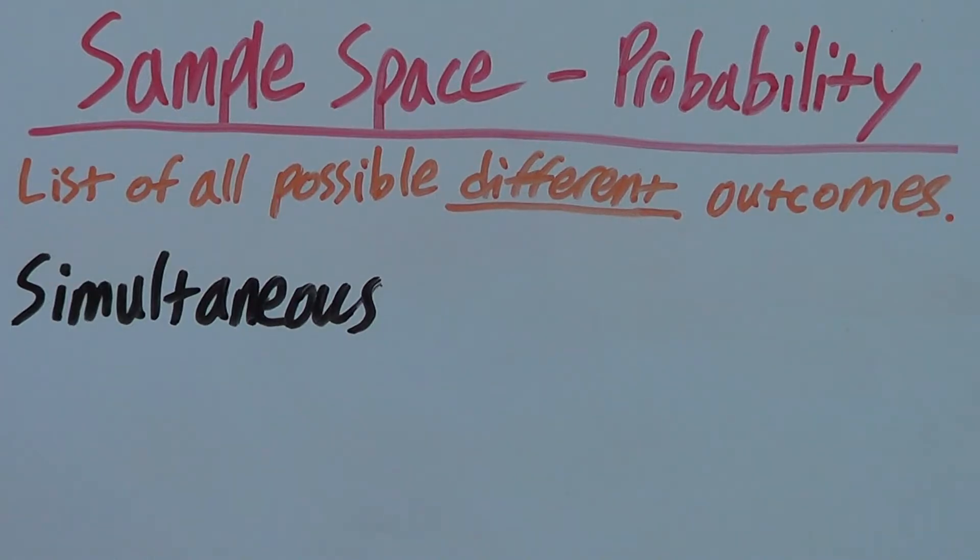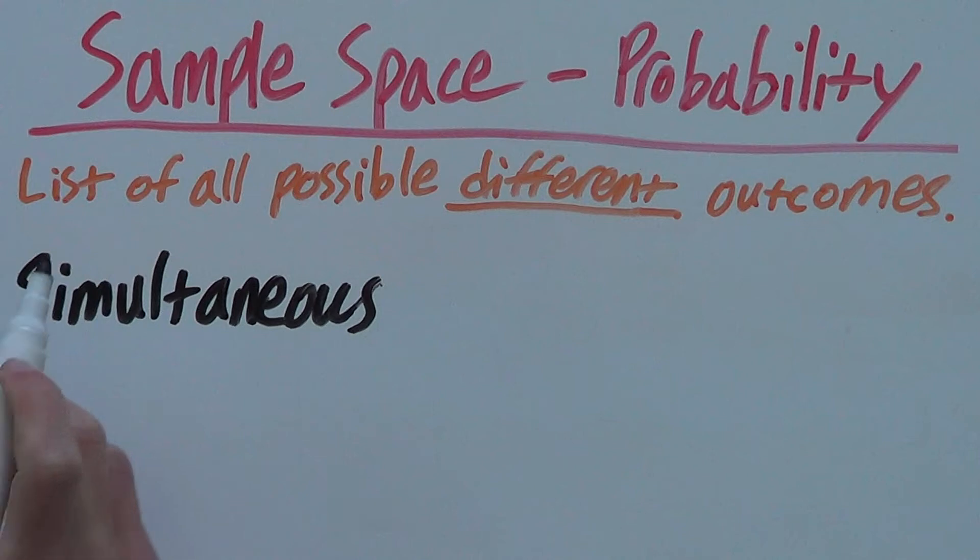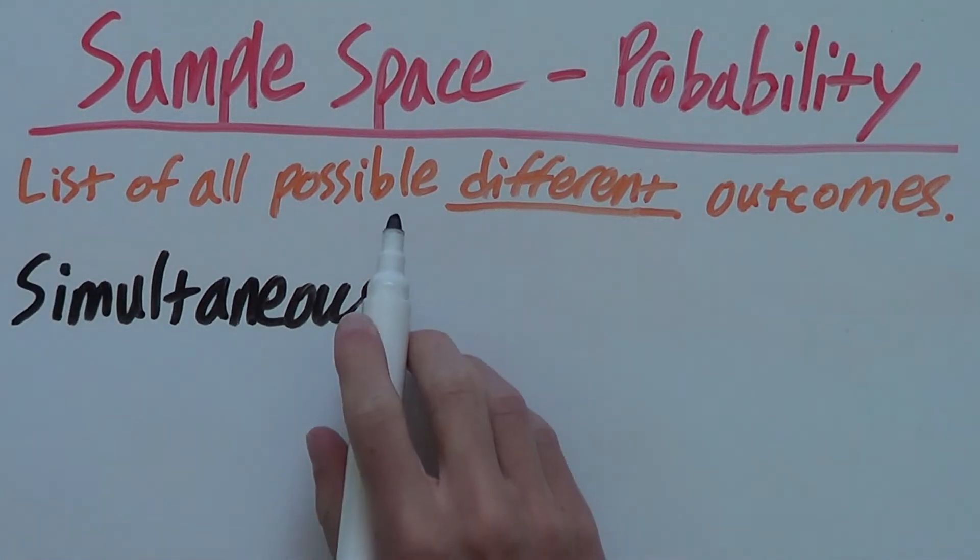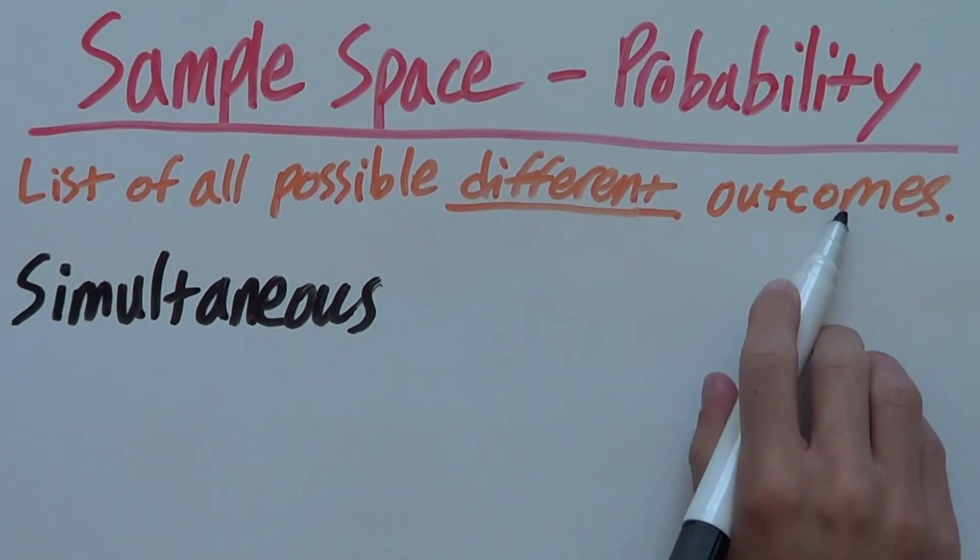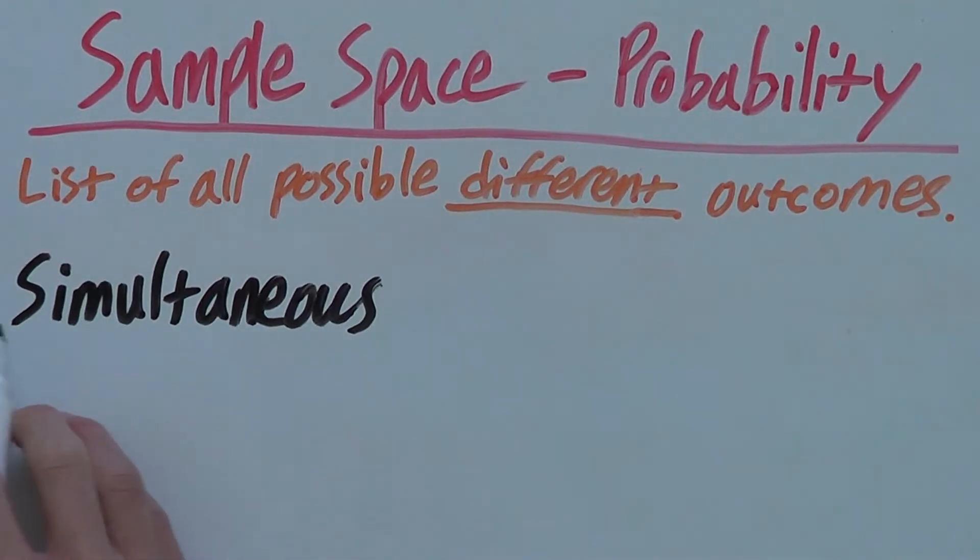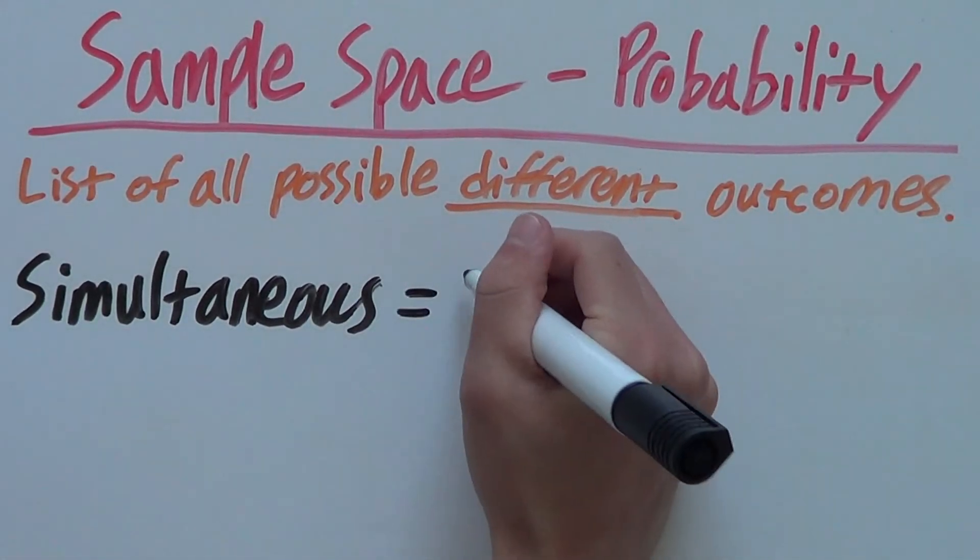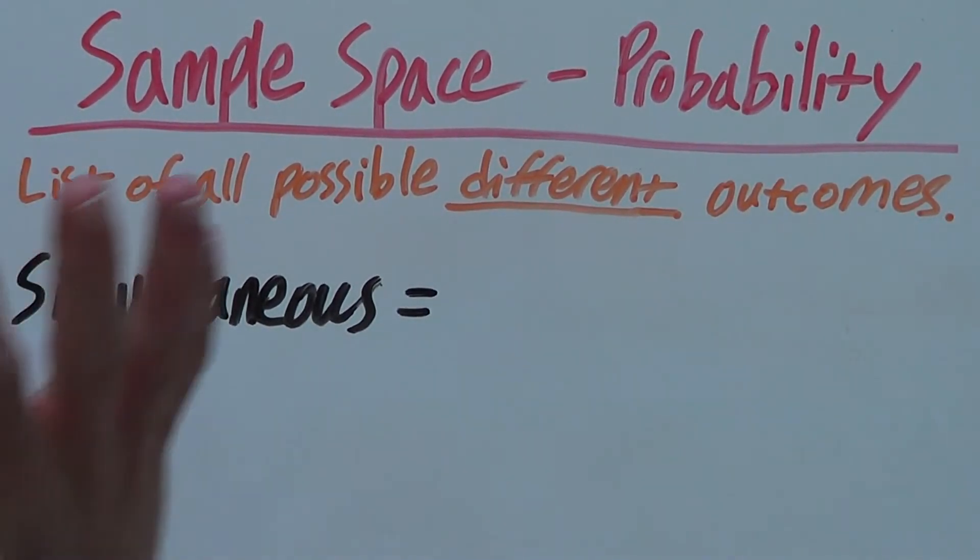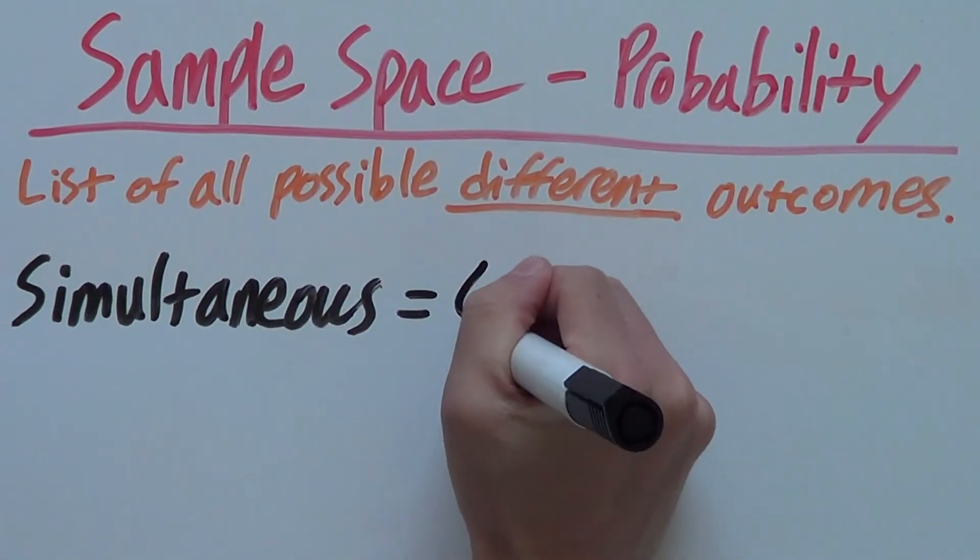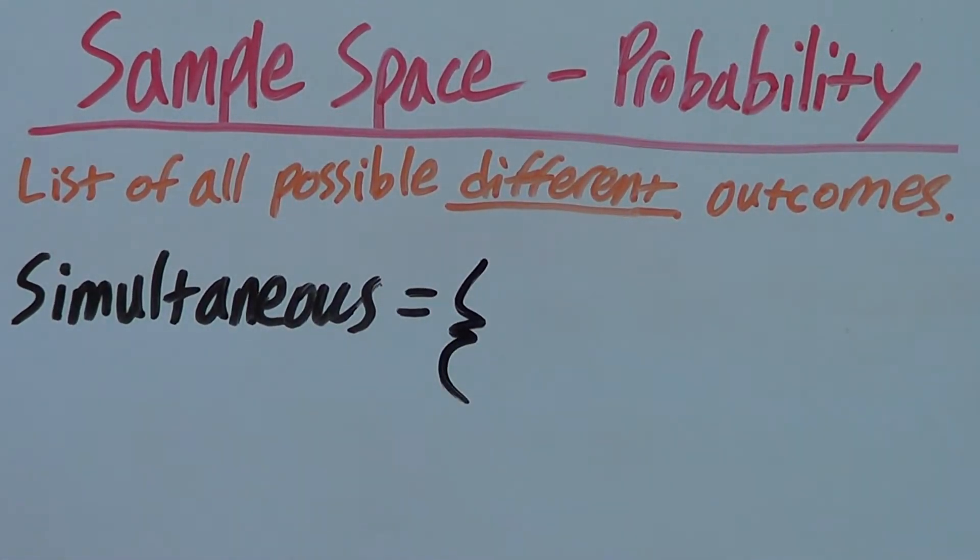The sample space of this word is a list of all possible different outcomes, or in this case, letters. And by the way, sample space is always written in curly brackets like this.